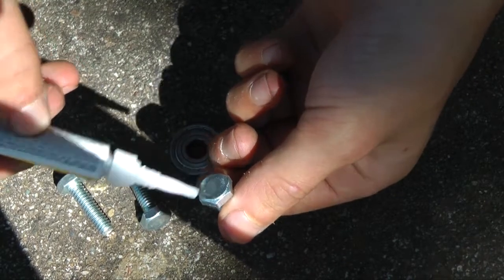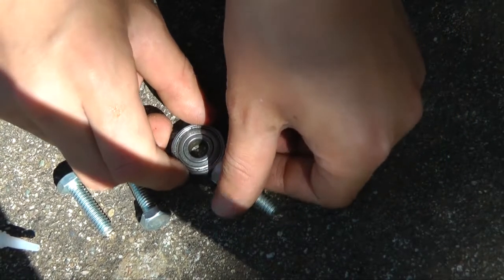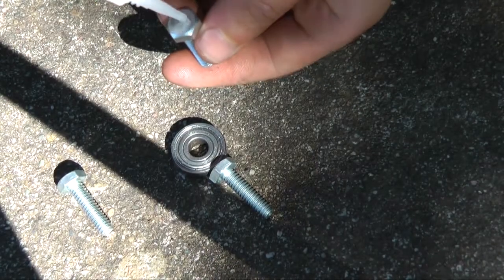Put some super glue on the screws and glue them onto the bearing. Make sure not to get it in the bearing.